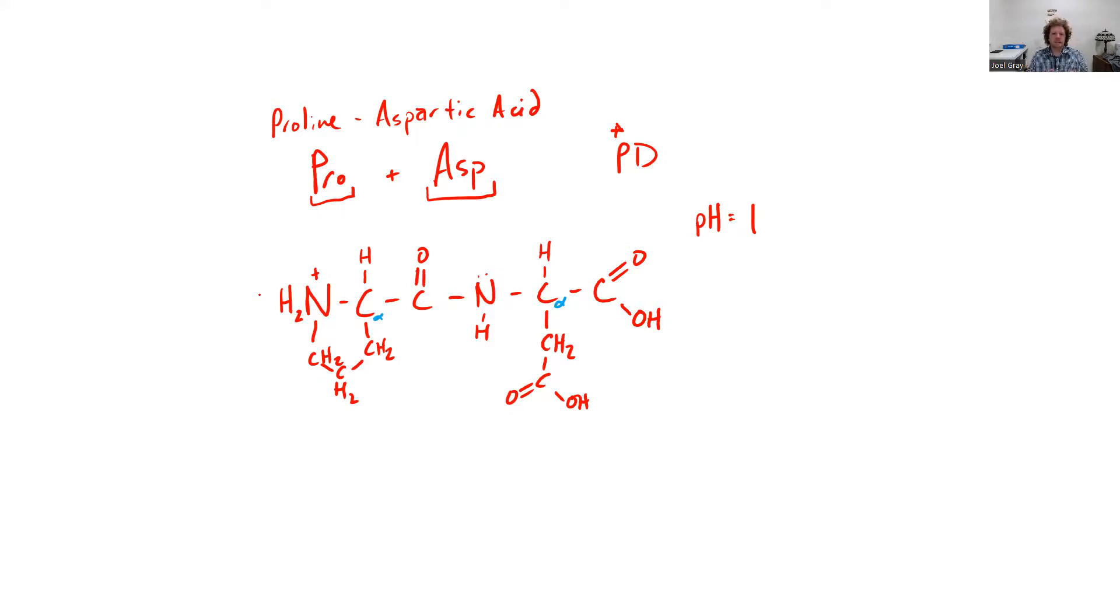So this molecule, as it's displayed, is what it looks like at a pH of 1. Now, if you adjust the pH of this solution, you have to take into account the pKa's. I'm going to come up with rough pKa's. My ionizable groups, I'm going to draw boxes around them.